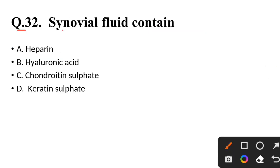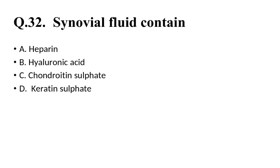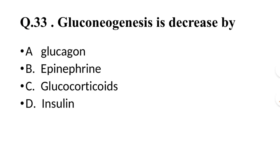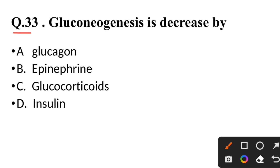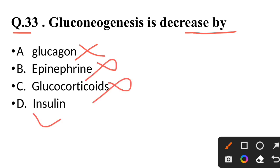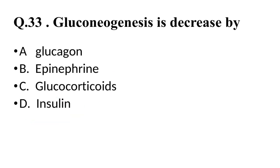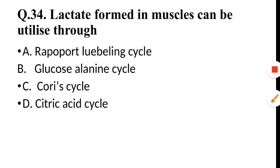Question 32: Synovial fluid contains — correct answer is hyaluronic acid. Question 33: Gluconeogenesis is decreased by — not glucagon, not epinephrine, not glucocorticoids — correct answer is insulin.